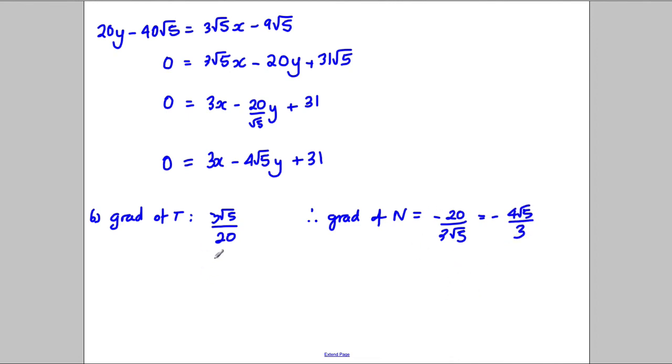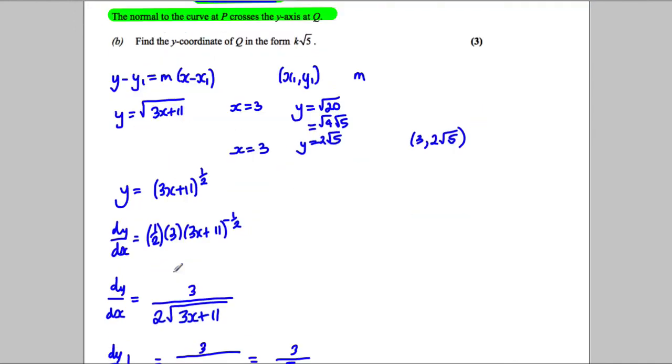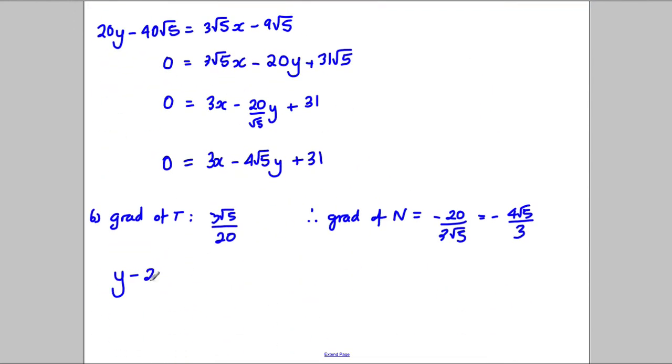So that's the gradient of the normal, and we have the point as well, so y subtract, the point was (3, 2√5), so y subtract 2√5 is going to equal negative 4√5 over 3, times x subtract 3, like that. So that's the equation of the normal.